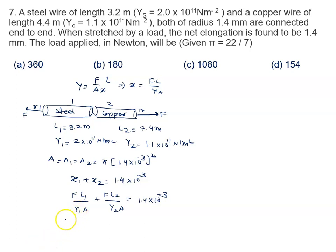We have to calculate the value of F. We can further write it. F by A common L1. L1 is given to us 3.2 upon 2 into 10 raised to power 11 plus L2 is given to us 4.4 upon 1.1 into 10 raised to power 11 equal to 1.4 into 10 raised to power minus 3.